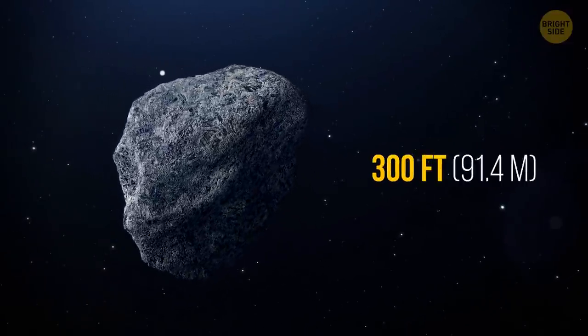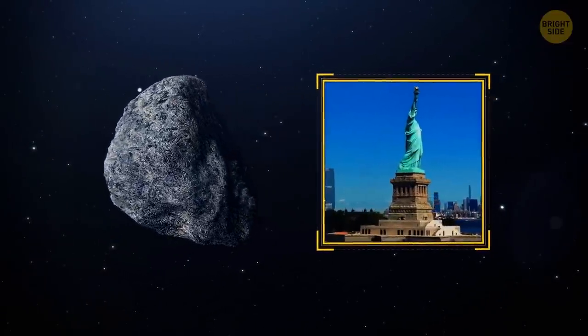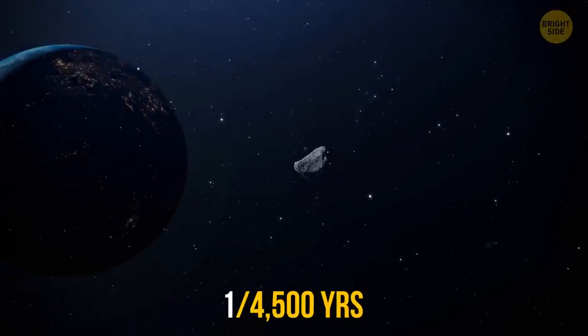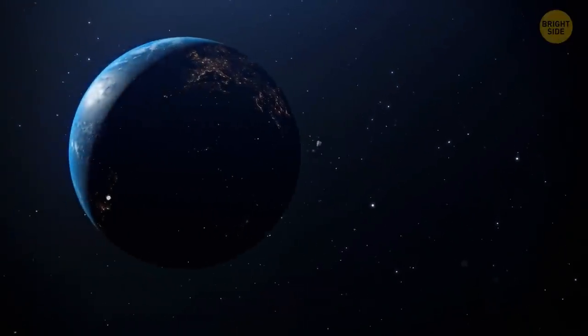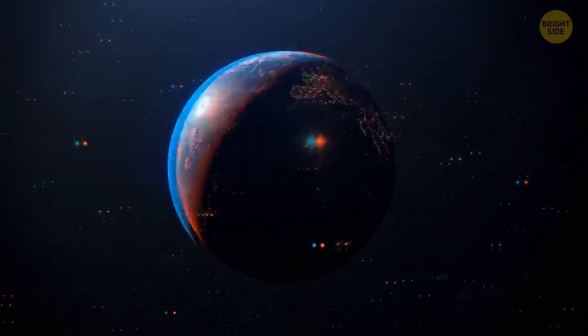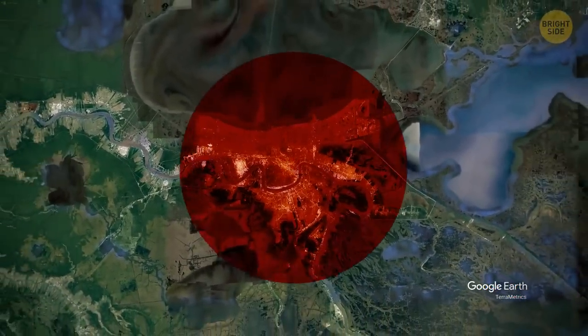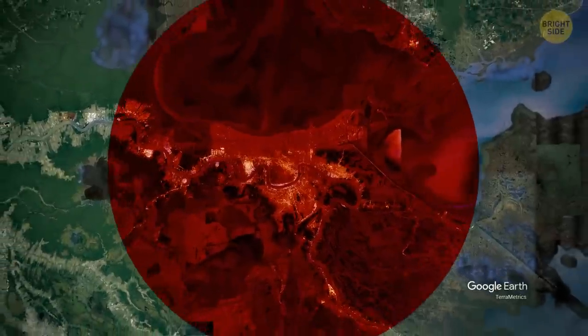300 feet. This is the height of the Statue of Liberty together with the pedestal. Such a giant can be seen every 4,500 years, and this is the first asteroid on our list that may literally crash into Earth. The consequences are disastrous. Not only may it demolish an entire city, but it can also set fire to neighboring areas.